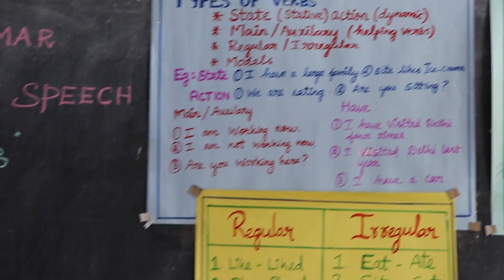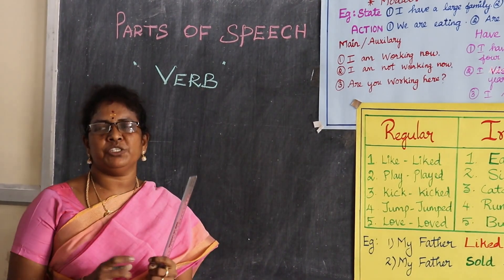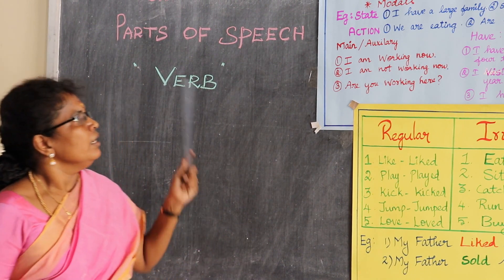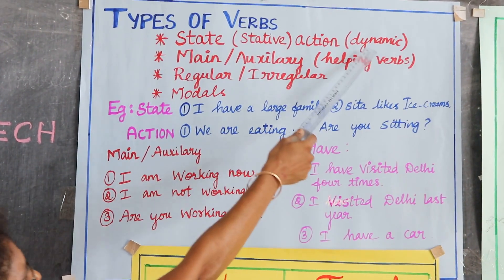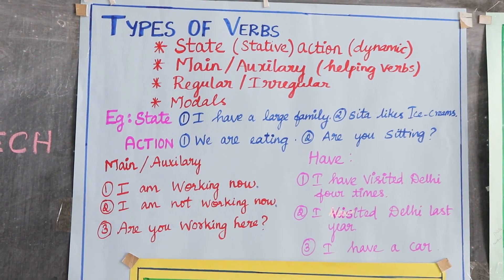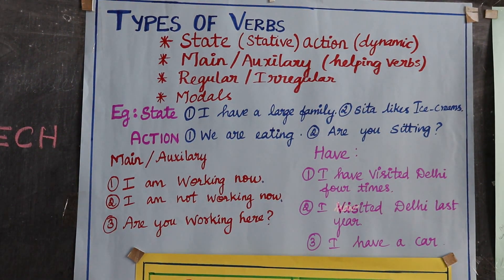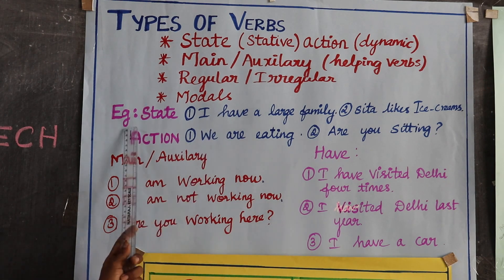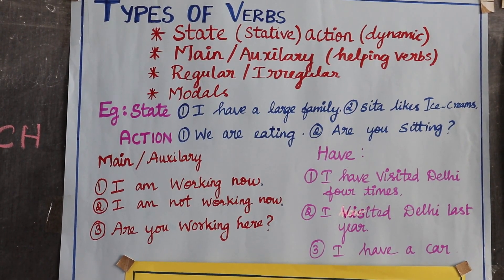First, let's look at state and action. What is state? State is a situation. Action denotes physical activity. Sometimes it is called stative and dynamic, but both have the same meaning. For example: 'I have a large family.' Have is a state word — have is not a physical activity.